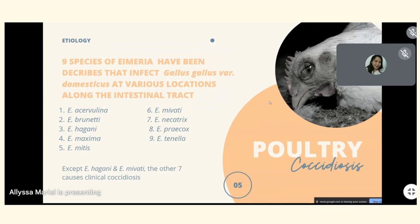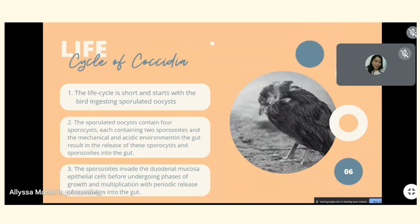Here are the nine species of Eimeria: E. acervulina, E. brunetti, E. hagani, E. maxima, E. mitis, E. mivati, E. necatrix, E. praecox, and E. tenella. Except E. hagani and E. mivati, the other seven species of Eimeria cause clinical coccidiosis.